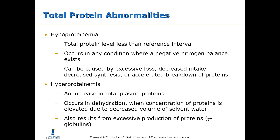Hyperproteinemia is the opposite — an increase in total plasma proteins. This occurs during dehydration, when the concentration of proteins is elevated due to decreased volume of solvent water. It also results from excessive production of proteins such as gamma globulins — if a large number of antibodies are produced, that can cause hyperproteinemia.